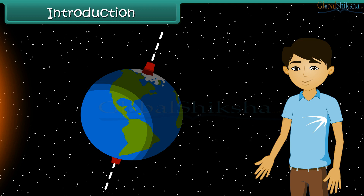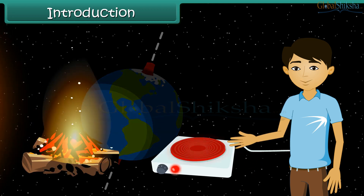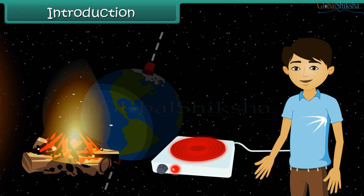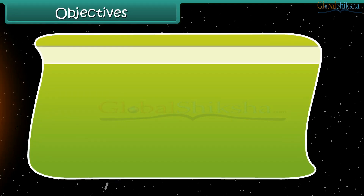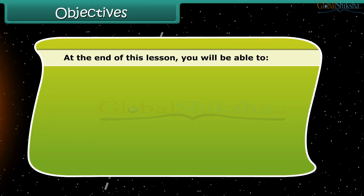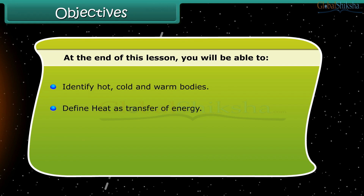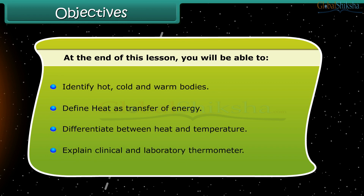Other sources of heat are fire and electric heater. In this lesson, we will study about heat and its measurements. At the end of this lesson, you will be able to: identify hot, cold and warm bodies; define heat as transfer of energy; differentiate between heat and temperature; and explain clinical and laboratory thermometers.